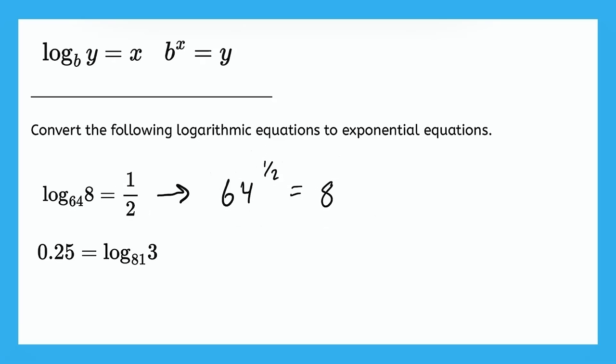All right, for this second example, let's have the log on the left side of the equation, just like we have up here. And then we'll have 0.25 on the right, just like we have x on the right up here. All right, there it is. Log base 81 of 3 equals 0.25. Now, as usual, I encourage you to pause the video and always try these examples by yourself before we do them together.